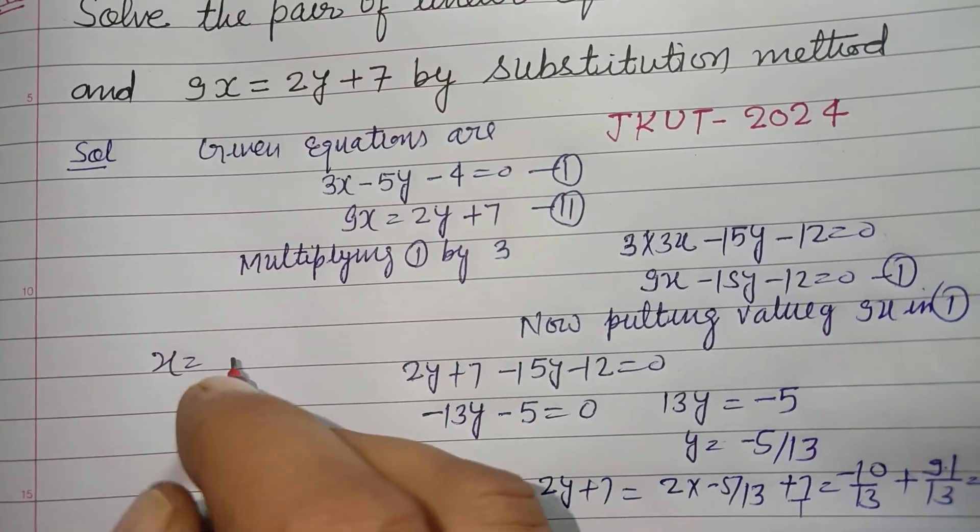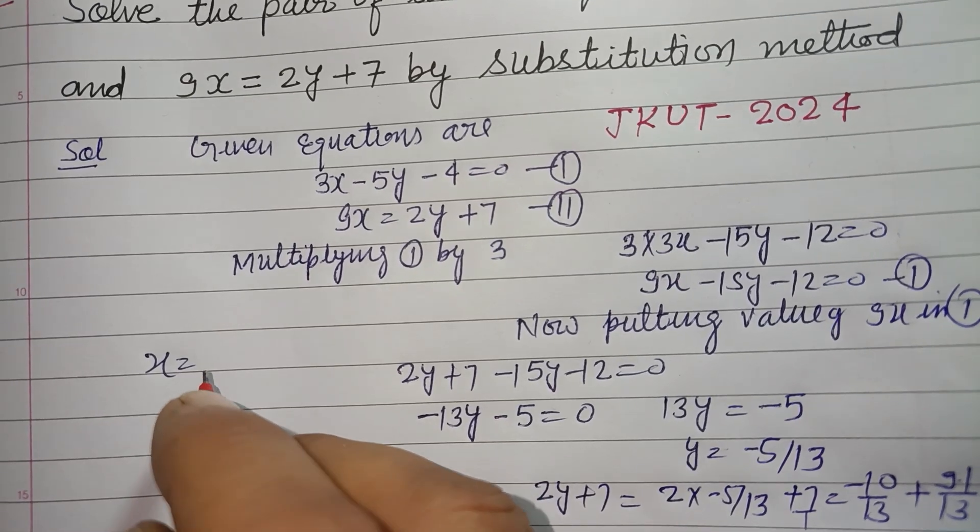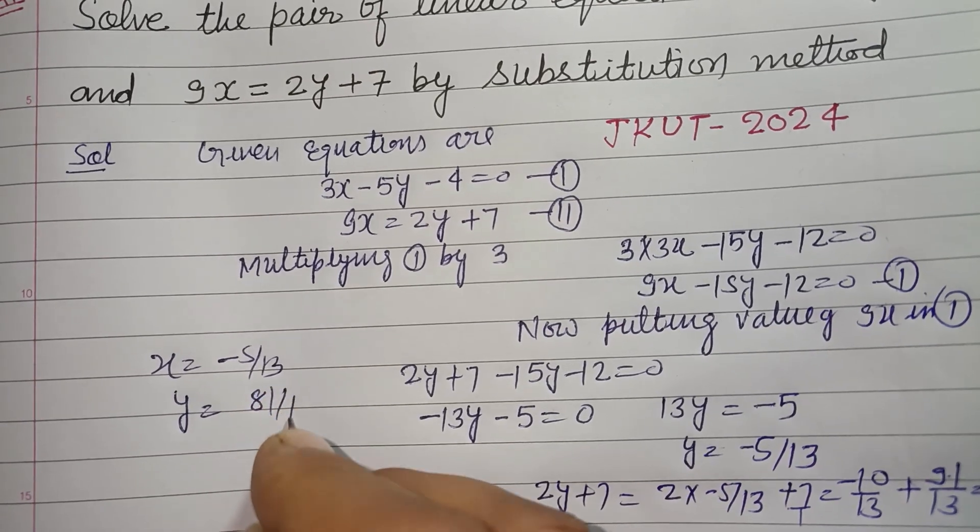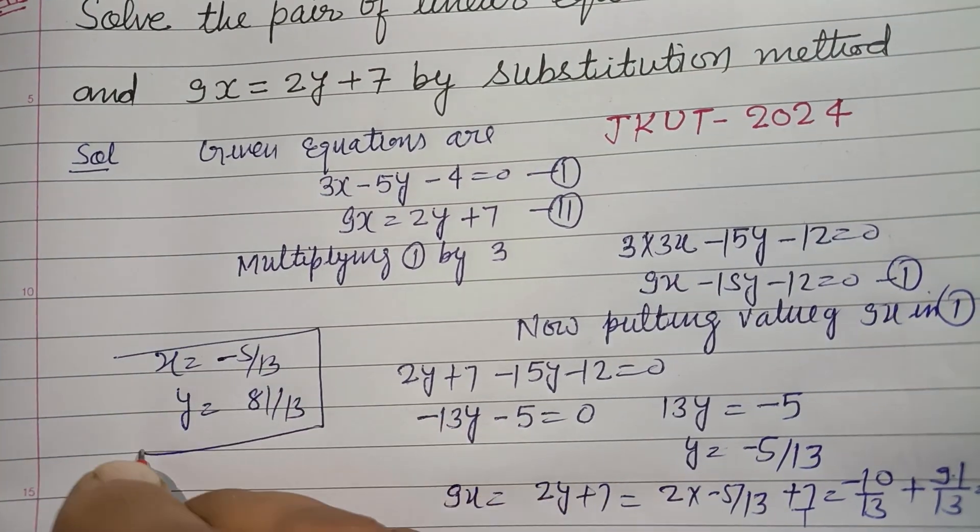Therefore, x equals 81 upon 13 and y equals minus 5 upon 13 is the solution.